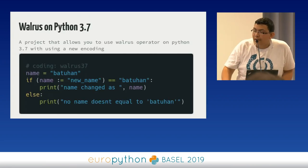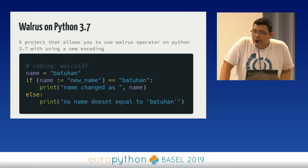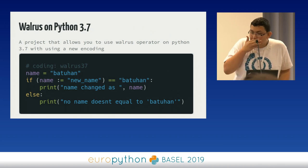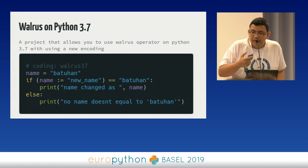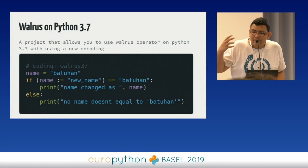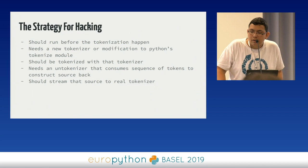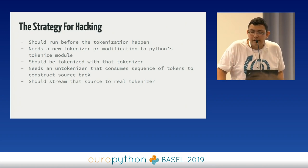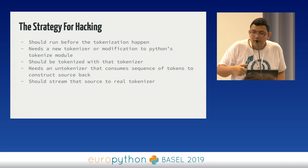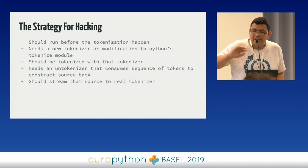The first hack is using the walrus operator on Python 3.7 — it's officially on Python 3.8, but you can use it on 3.7. To do this hack, we need to interfere between tokenization and file reading. The only step between them is encoding, so we are going to add our own encoding. When decoding, we will alter the code to be Python 3.7 compatible. Our code should run before tokenization. We'll modify Python's tokenize module, tokenize the source with it, alter the code by changing tokens and positions, then untokenize and stream back to the real tokenizer.